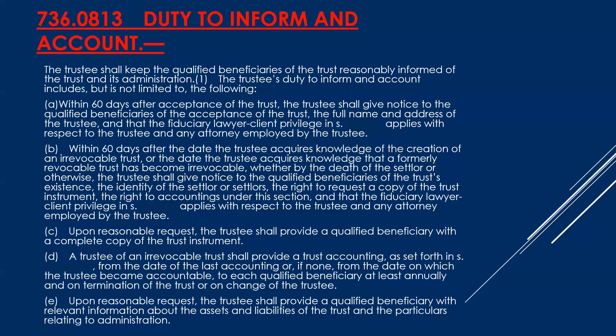Let's talk about the duty to inform and account — two of the most important duties a trustee has. Under 736.0813, within 60 days after acceptance of the trust, or when a trust becomes irrevocable, the trustee must give notice to the beneficiaries: who you are, your name, your address. If you have a lawyer, you must disclose the attorney-client privilege that applies between trustee and attorney. You must also give beneficiaries a complete copy of the trust agreement including any amendments, and provide annual accountings.